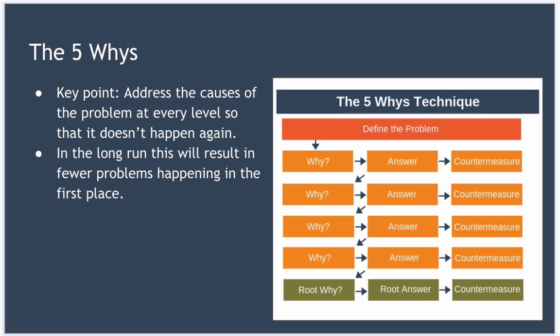The key point here is that we're addressing the causes of the problem at every level so it doesn't happen again. The diagram shown here more adequately reflects the five whys, whereby we're deploying countermeasures at every level of our analysis. Over time, as you fix problems in this way, you will build more robust processes and systems, and that should result in fewer problems happening in the first place. It's also worth noting that what at first glance appears to be a technical problem often transpires to be a human problem or a process problem at its root.